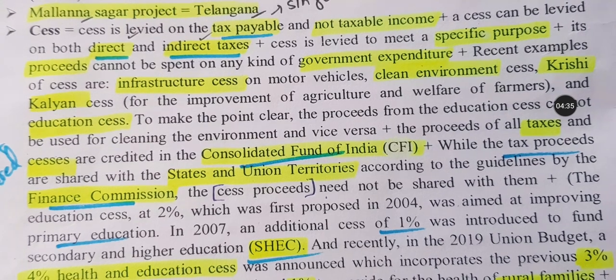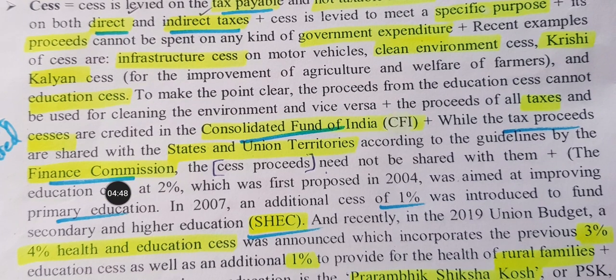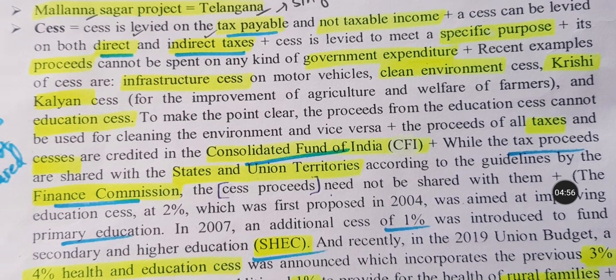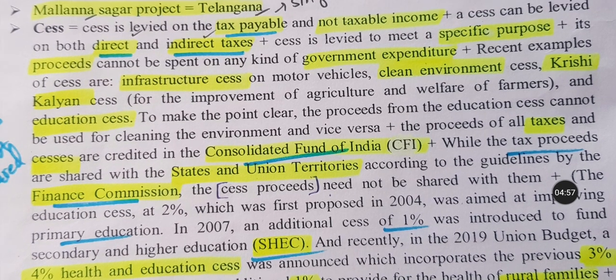For example, the education cess at 2% was proposed in 2004, which was later raised to 3%. Then you can have education and health cess combined — for instance, 'education and health cess.' This is the summary of the cess concept — levied on tax payable, used for a specific purpose, and not shared with states.